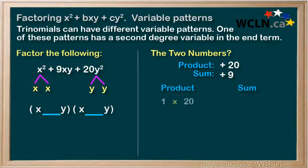We have 1 times 20, 2 times 10, and 4 times 5. All three of these will multiply to 20, but we're looking for the pair that will give us a sum of 9.